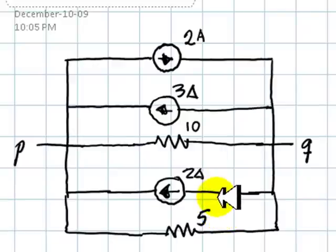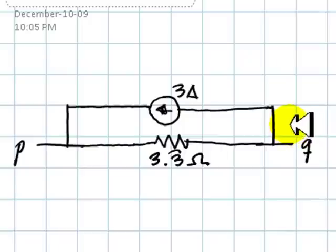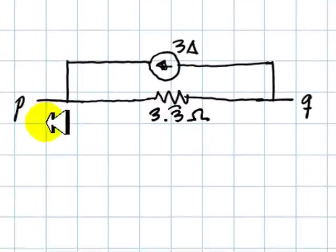Now we can simplify all the current sources. This one cancels out this one. We're left with 3 amps and 10 in parallel with 5. This would be the equivalent, the Norton equivalent, of that circuit at the port PQ.